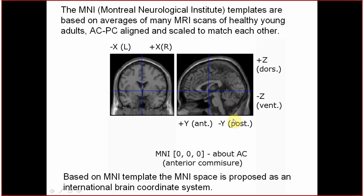The last coordinate is Z. It is a vertical displacement: a positive Z value is above the anterior commissure, and negative Z is ventral to the anterior commissure. The 0, 0, 0 coordinate is approximately at the anterior commissure, but not exactly.